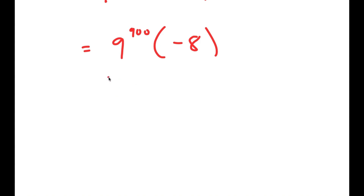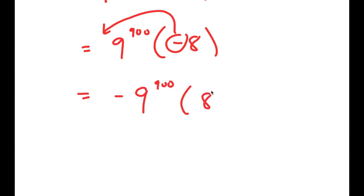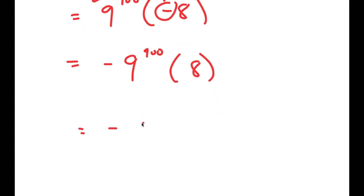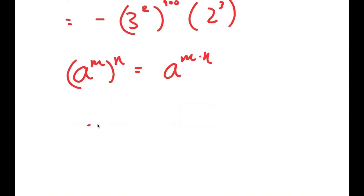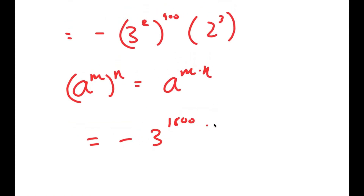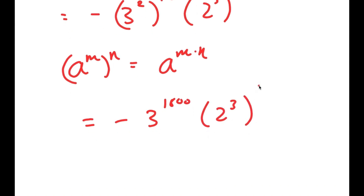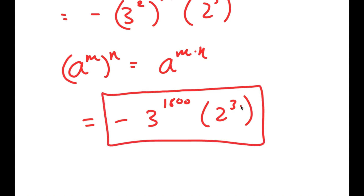We can't get the exact value since 9 to the power of 900 is such a large number, but we can simplify as much as possible. Moving the negative sign to the front gives negative 9 to the power of 900 times 8. Rewriting 9 as 3 squared and 8 as 2 cubed, and applying the power-of-a-power property — a to the power of m to the power of n equals a to the power of m times n — gives negative 3 to the power of 1800 times 2 to the power of 3. This is the final simplified answer.